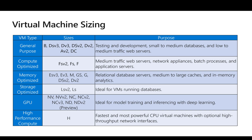One thing to note is that some VM categories have an S series as well. For example, we have D series and DS series — those are almost the same. When you see the 'S' subscript, you should be aware that it is the same D series but with an SSD option.